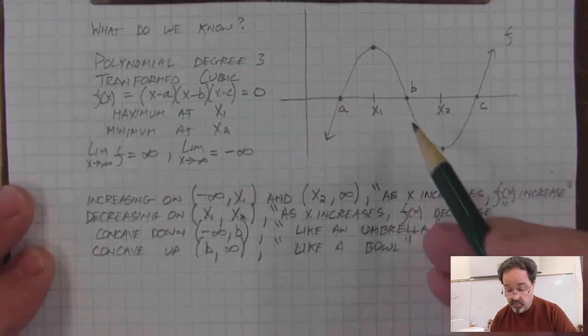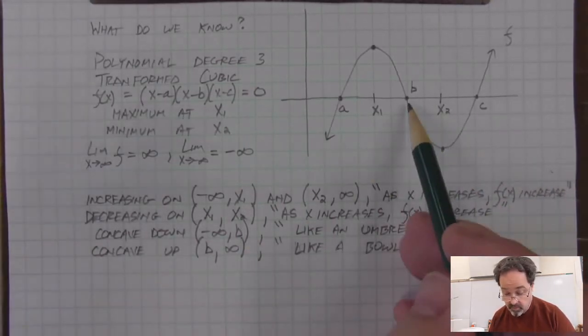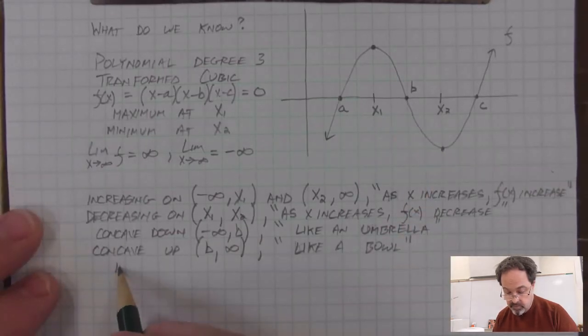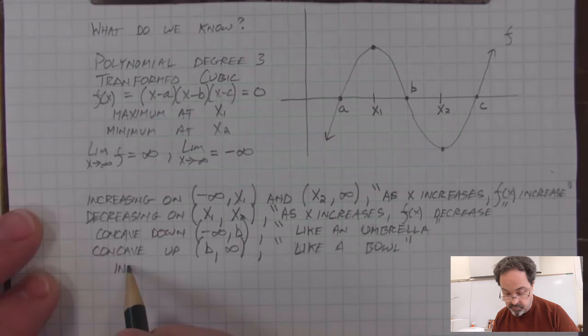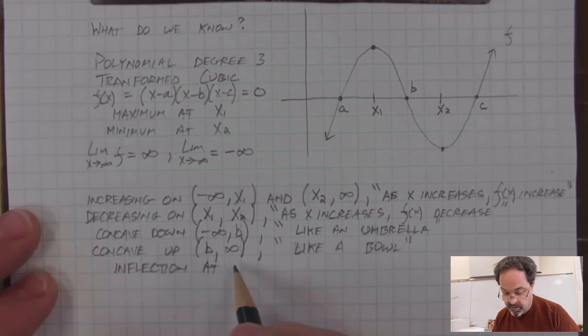And the place at which the concavity changes, which is neither concave up or concave down at b, but b is a special location and feature of the function, we call it inflection point. So there is an inflection at b because there is a change in concavity at b.